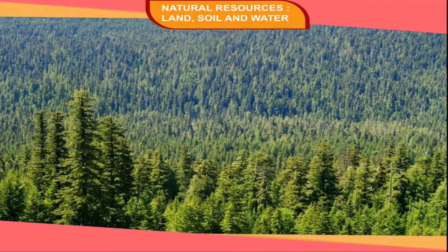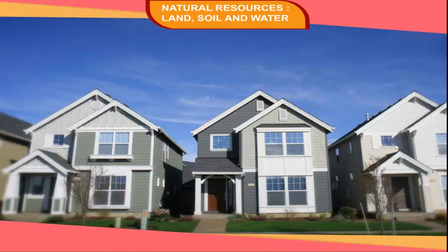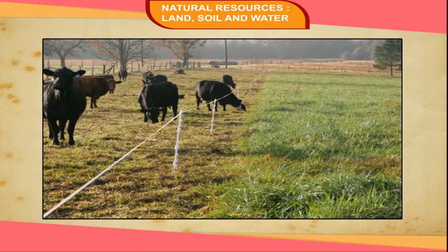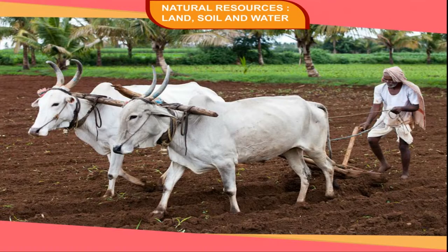Densely populated areas tend to encroach upon forest land to make room for other human requirements like buildings, houses, roads, etc. Environmentally speaking, a country must possess 33% of its area under forests. Unfortunately, most countries including India do not fulfil this norm. On the other hand, India possesses the highest percentage of area under cropland and has the highest number of livestock population.